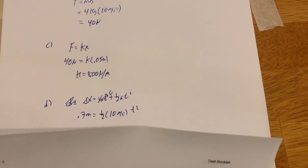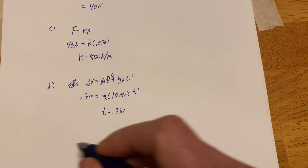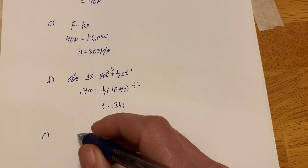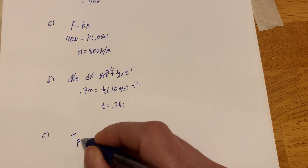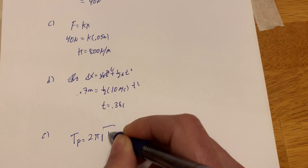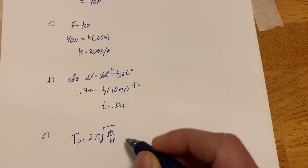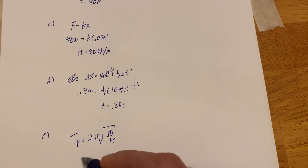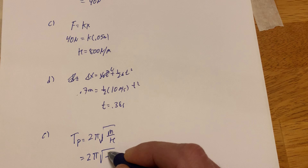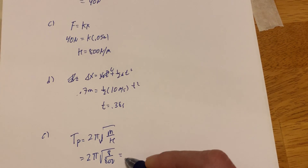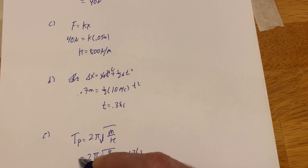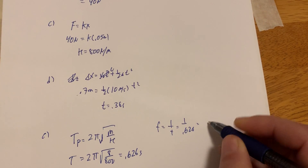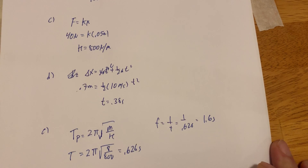Next: calculate the frequency of oscillation — that's Part E. Looking at the reference table for a spring-mass system, they give you the period, which is 2π times the square root of m over k. I can't directly solve for frequency, but I can solve for the period and take the inverse. 2π times the square root of 8 over 800 gives me 0.626 seconds for the period. So frequency is 1 over 0.626, which is about 1.6 Hz.